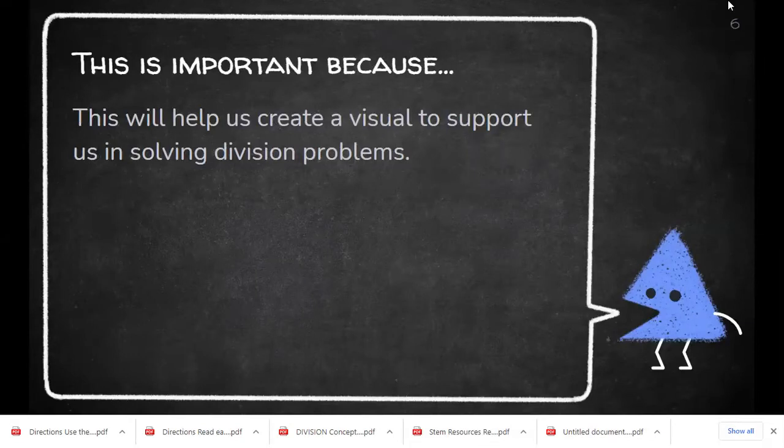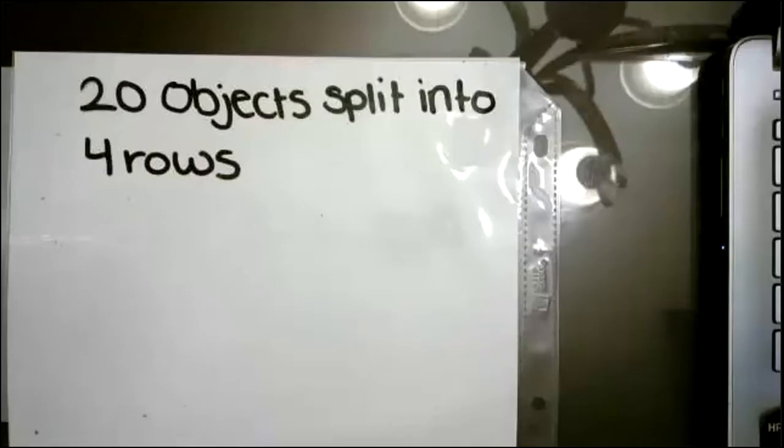All right, friends. So now we're going to start with some examples. We've been learning how to read an array. Today, we're going to learn how to create an array to help us with our repeated subtraction and division. We already know that an array is a way to organize objects so that it's easier to count. These objects are arranged into rows and columns that are straight and equal.